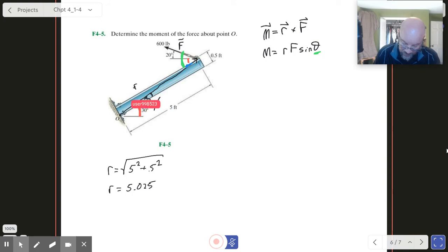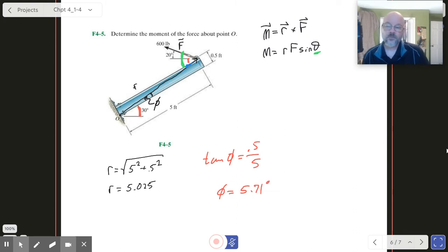So phi is our angle right in there like that. And what we can know then is that the tangent of phi is going to be 0.5 over 5. It's just the rise over the run, just a simple slope, opposite over adjacent. And if you work out what phi is on your calculator, then what you get is 5.71 degrees.